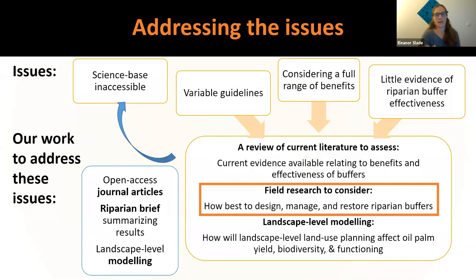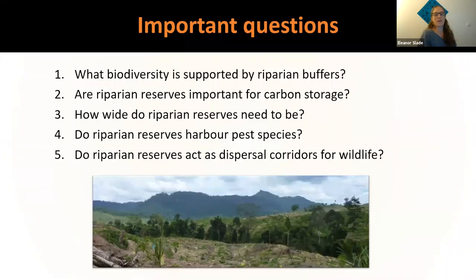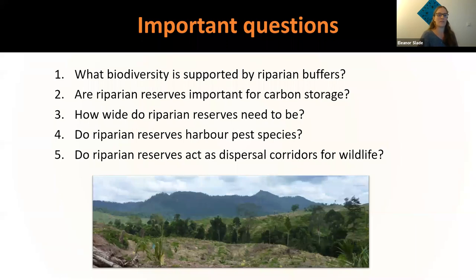The second thing we wanted to do to address the knowledge gaps — particularly around the full range of benefits of riparian reserves — was to conduct field research into the effectiveness of riparian buffers for terrestrial biodiversity. We identified five key questions: what terrestrial biodiversity is supported by riparian buffers; are riparian buffers important for carbon storage; how wide do riparian buffers within oil palm agriculture need to be; whether riparian buffers are harbouring pest species; and whether they might act as dispersal or movement corridors for wildlife across the landscape.